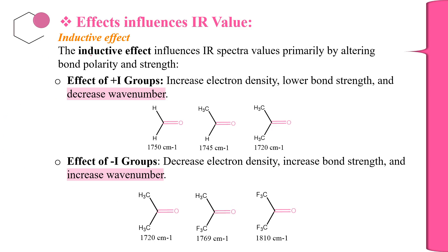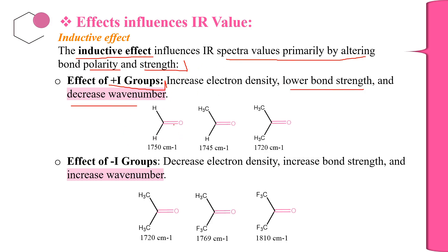The inductive effect influences IR spectral values primarily by altering bond polarity and strength. If a particular group contains a +I (plus inductive) group, that +I group donates electron density toward the particular functional group, which lowers the bond strength and decreases the wavenumber.